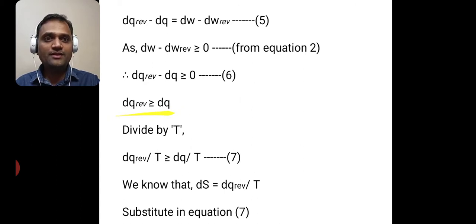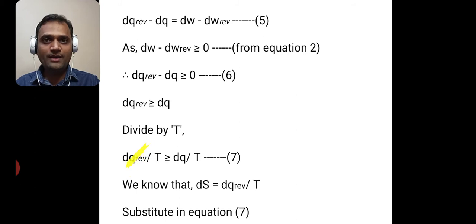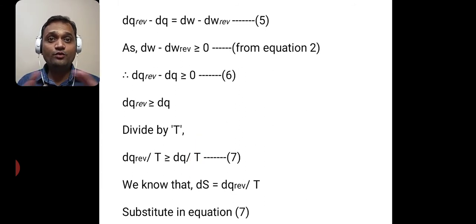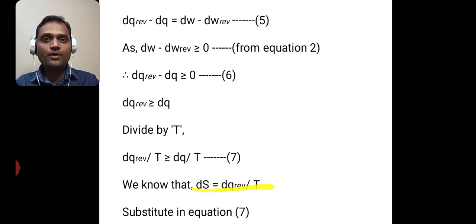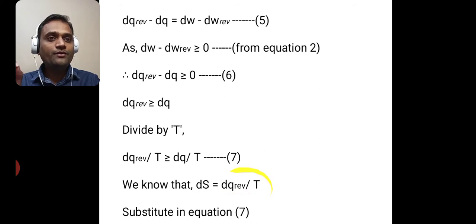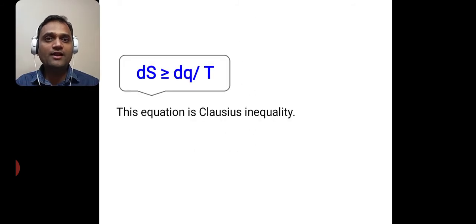Rearranging, we get dq reversible is greater than or equal to dq. Dividing by temperature T, we get dq reversible upon T is greater than or equal to dq upon T. Now we know that ds is equal to dq reversible upon T, which is the thermodynamic definition of entropy studied in previous lectures. Substituting into equation 7, we get ds is greater than or equal to dq upon T, which is the Clausius inequality.